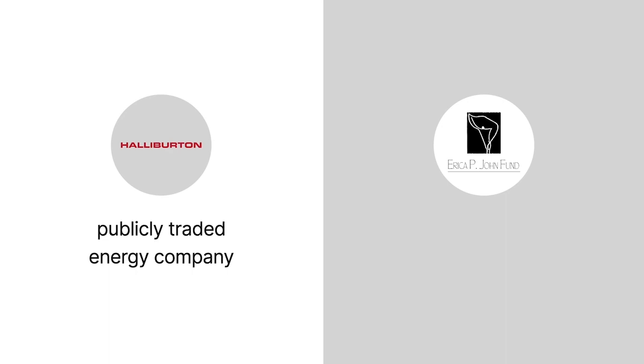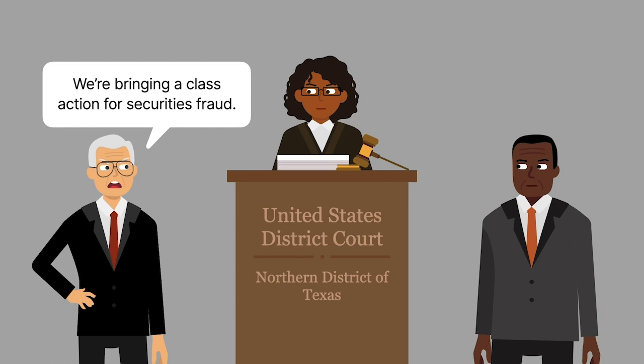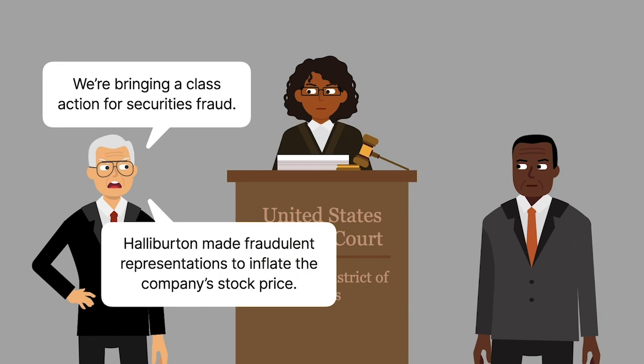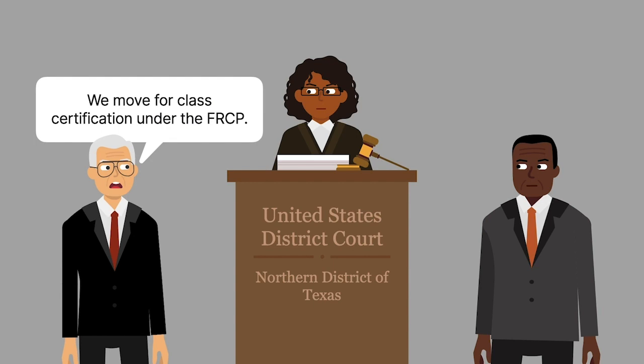In 2008, a group of investors represented by the EPJ Fund filed a class action lawsuit against Halliburton in federal district court for securities fraud. Specifically, the investors claimed that Halliburton made fraudulent representations to inflate the company's stock price. Halliburton moved to dismiss the action, which the court denied. The EPJ Fund then sought to have its proposed class certified under the Federal Rules of Civil Procedure, or FRCP.